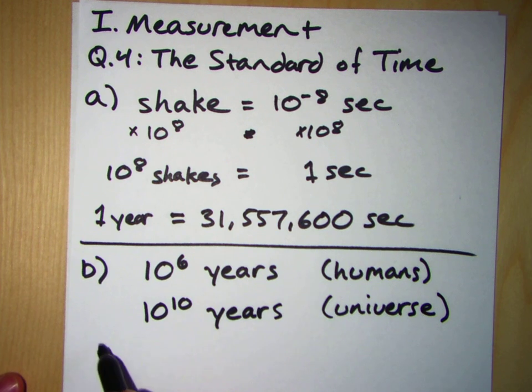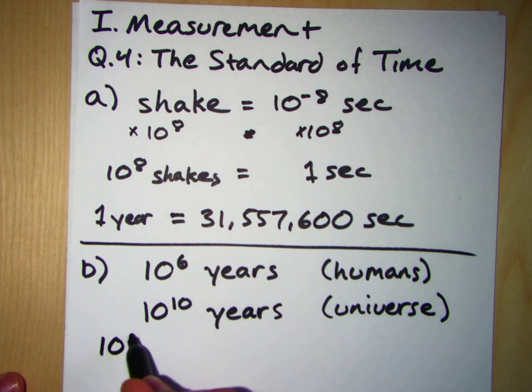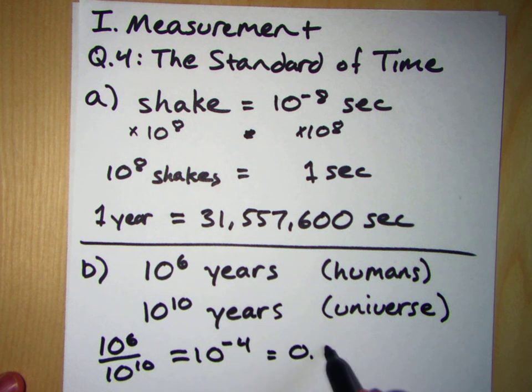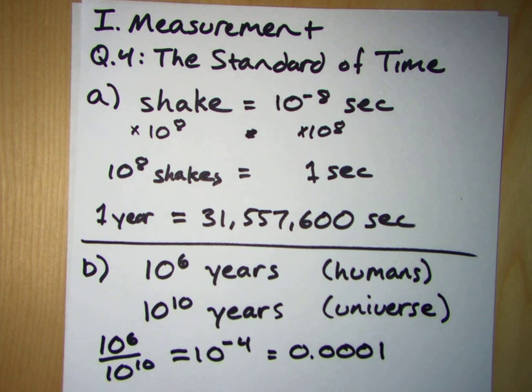So 10 to the 6th, so what fraction of time have humans been around? 10 to the 6th divided by 10 to the 10th means we've been around for 0, so this is 10 to the minus 4th, so this is 0.0001, so one ten thousandth of the history of the universe.